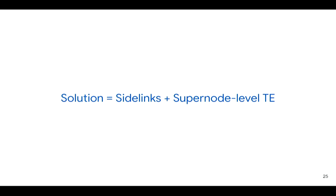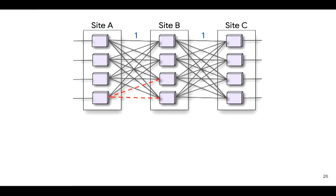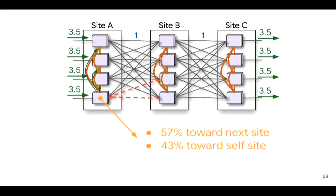To solve this, our solution combines side links and super node-level TE. Coming back to this example, we can form side links that interconnect super nodes within the same site. These side links are relatively inexpensive compared with long-haul WAN links because they are local and short distance. If we apply super node-level TE to load-balance traffic across super nodes within the site at side A, then we can recover most of the capacity loss.